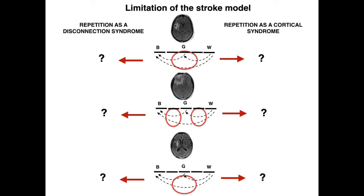With a pure subcortical lesion affecting only the white matter, we can't differentiate which part of the white matter is affected. Furthermore, every lesion to the white matter will lead to cortical degeneration over time. So this stroke model is limited in terms of what we can learn from it, and we thought that changing the model might help us better understand where repetition deficits are linked to in the brain.